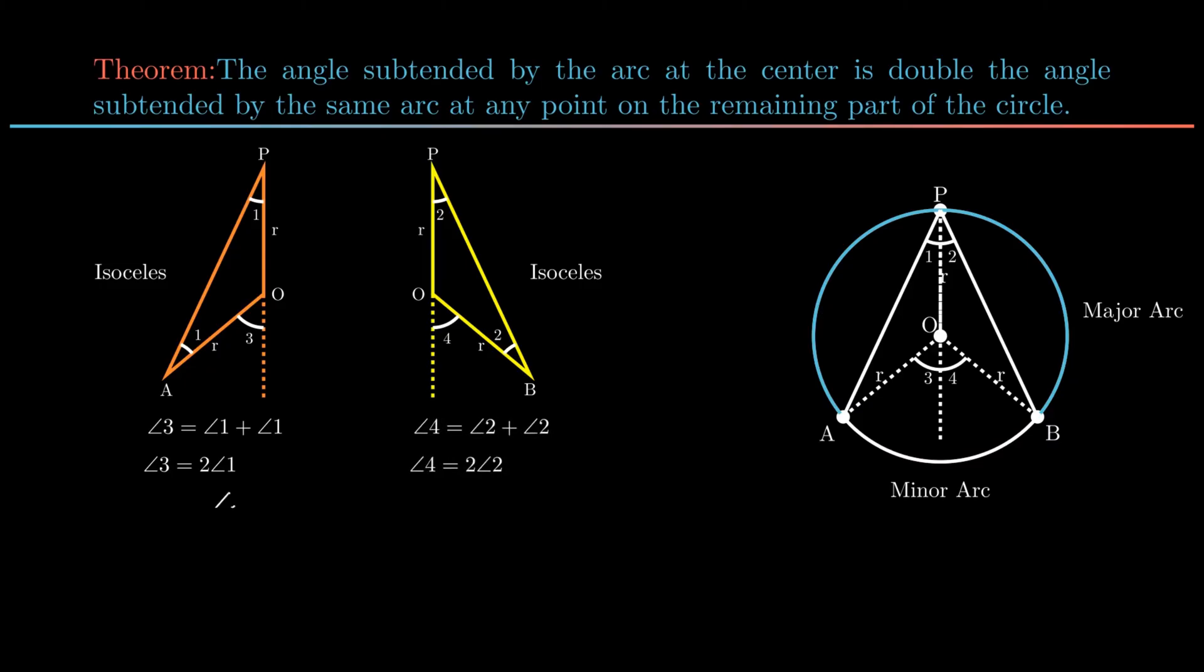As angle AOB is the sum of angle 3 and angle 4, so on adding we get angle AOB as twice of angle APB. Hence the theorem is proved. This was it for the video. See you in the next one. Thank you for watching.